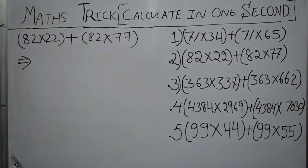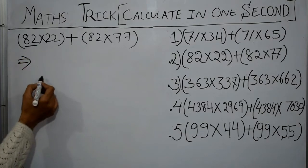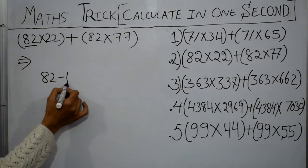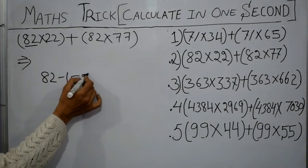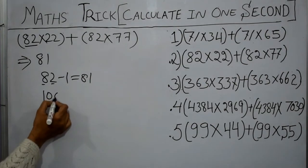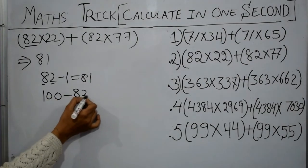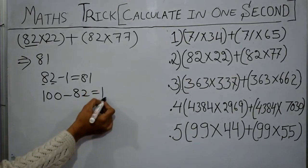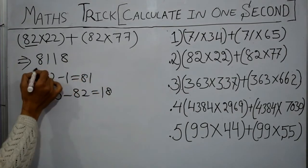Our second sum is 82 multiplied by 22 plus 82 multiplied by 77. In this sum, just repeat the same trick. Look at the first number. The first number is 82, less 1 from 82 we get 81. This is of two digits so we will take 100. Subtract 82 from 100, we got 18 and this is our answer.